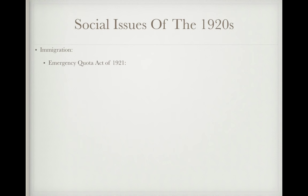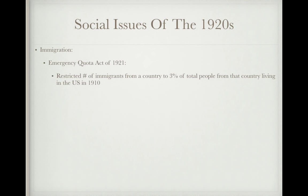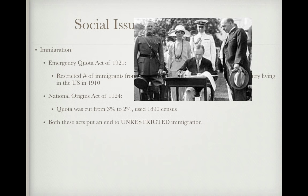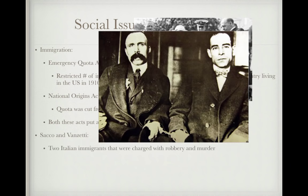Regarding immigration: the Emergency Quota Act of 1921 restricted the number of immigrants from any country to three percent of the total people from that country living in the U.S. in 1910. For example, if 100 Italians lived in the U.S. in 1910, only three immigrants from Italy could enter in 1921. The National Origins Act of 1924, signed by Calvin Coolidge, restricted immigration even further — cutting the quota from three percent to two percent and using the 1890 census instead of 1910. The purpose was to end unrestricted immigration.